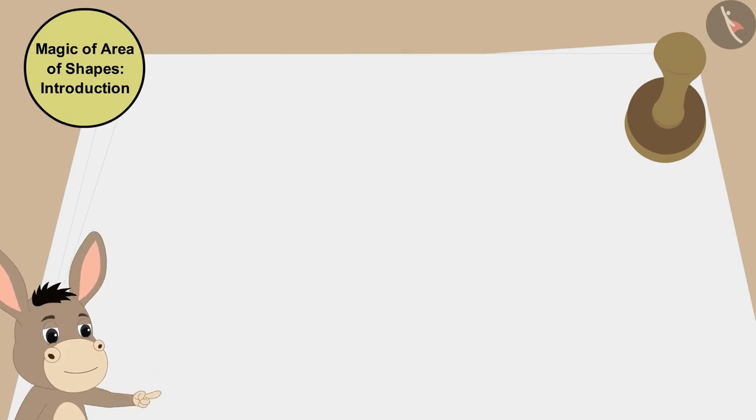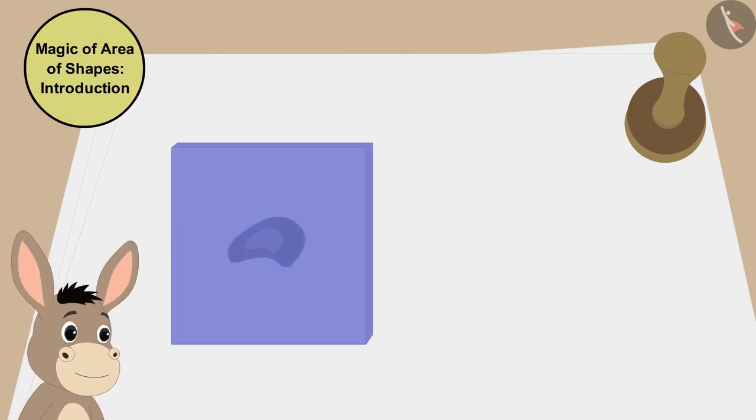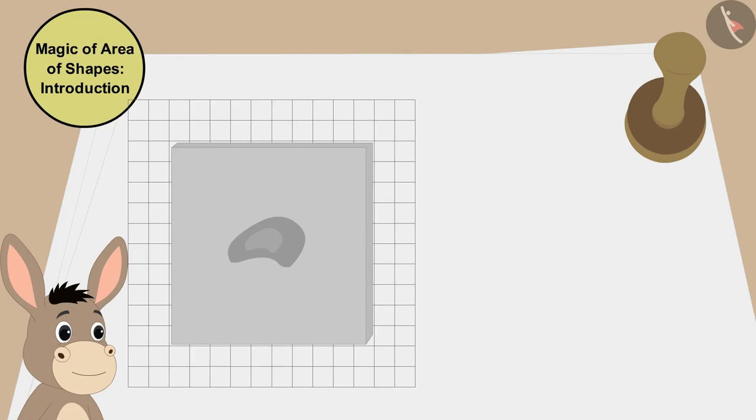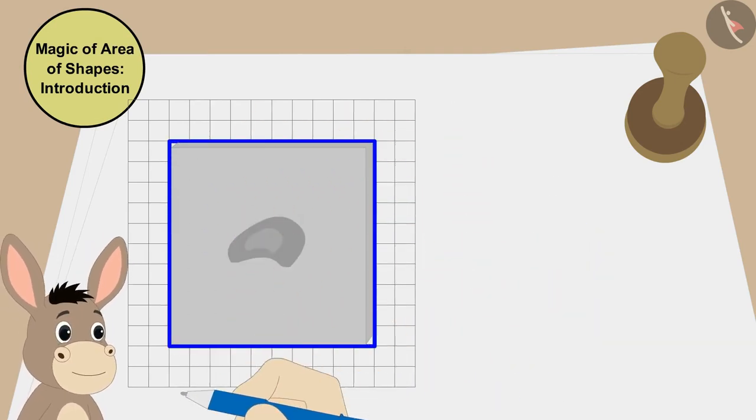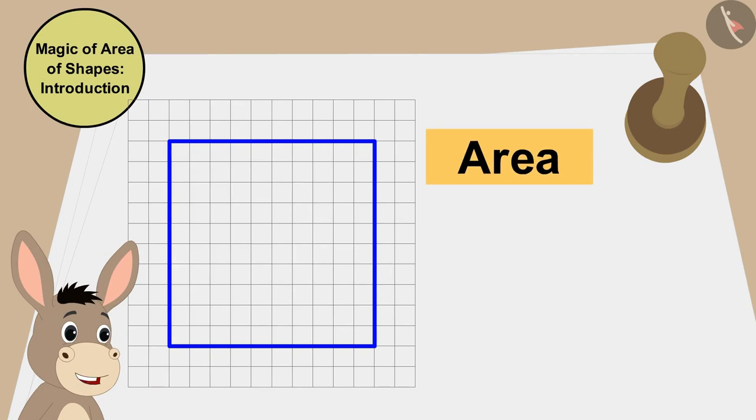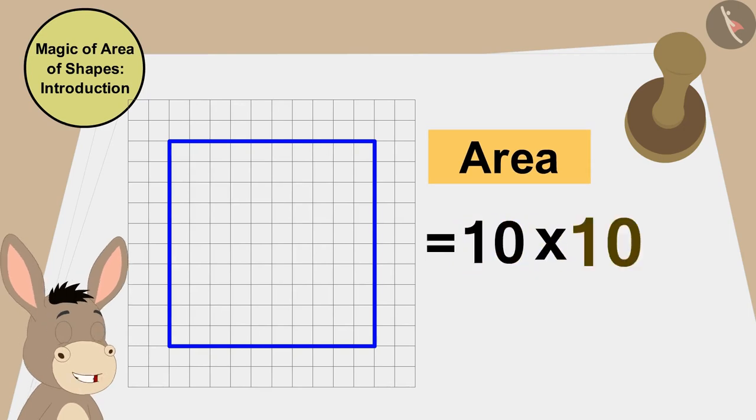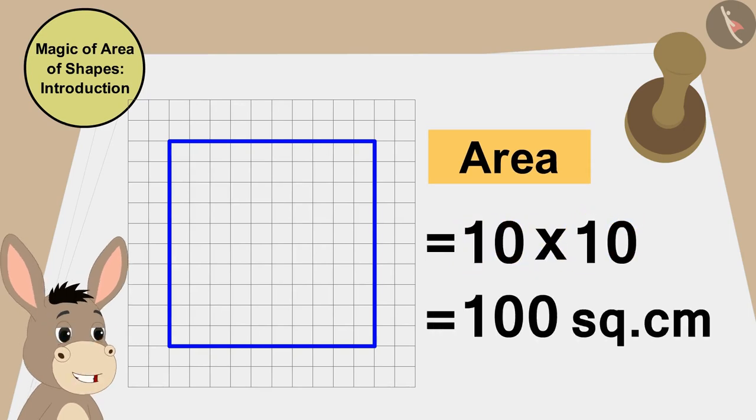Bhoola first drew the outline of the cashew barfi on a grid paper like this. The area of this cashew barfi is 10 times 10, that's 100 square centimeters.